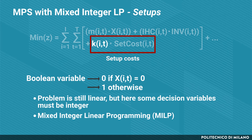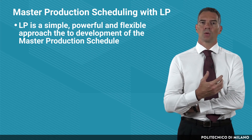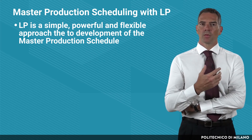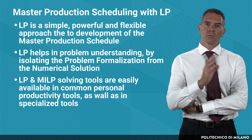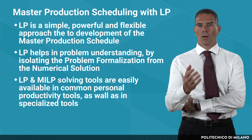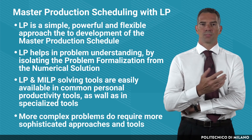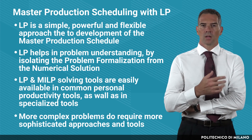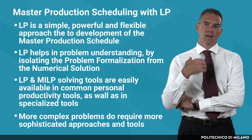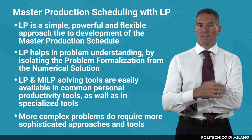MILP is much more complicated from a computational point of view, but much more powerful in terms of the decision-making problems it can tackle. As discussed in this lecture, linear programming is a simple, powerful, and flexible approach to developing the master production schedule. It also helps in understanding the problem because it separates the problem formalization from the numerical solution. Once formalized, you can use many tools — from common personal productivity tools to specialized software — to go from the model to the numerical solution. Of course, more complex problems such as non-linear problems or those with multiple conflicting objectives require more sophisticated approaches, bringing us to the field of advanced planning and scheduling systems. For a lot of real-life applications, however, linear programming is very viable and very effective.